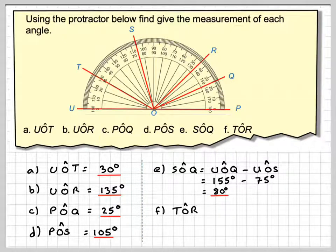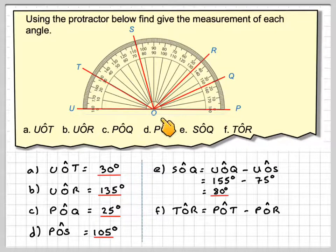So this one, TOR, so we need to measure this angle here, TOR. To do that, using the protractor as it is, I'm going to use POT, which is this one here. And then I'm going to take from it POR, and that will give me the angle TOR.